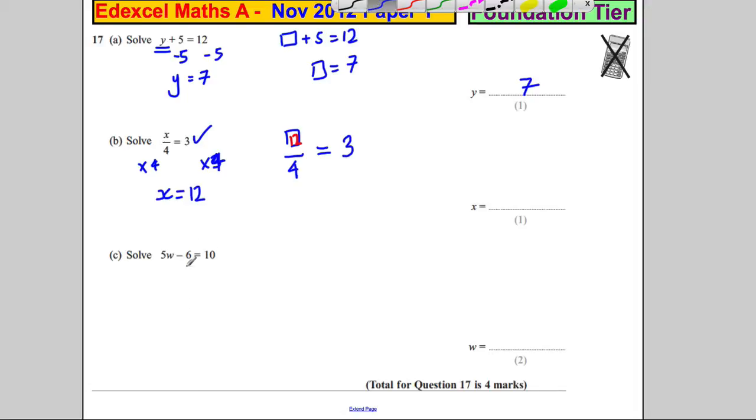And here's the next one: 5 multiplied by w subtract 6 is 10. The balance method - we'd add 6 to both sides to undo this subtract 6 and we would get that 5w is equal to 16. And then we would divide both sides by 5. W is going to be 16 divided by 5, and it's absolutely fine to leave your answer like that.